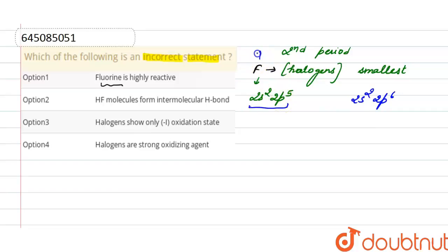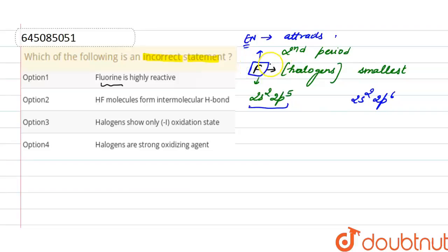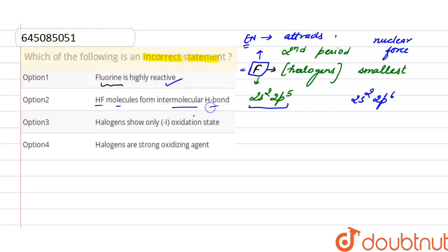Due to its smaller size and the outermost electronic configuration 2s2 2p5, fluorine is highly electronegative in nature — it attracts an incoming electron very easily. Because of the smaller size, the nuclear force of attraction is very high. That is why fluorine is highly reactive in nature, so the first statement is correct.